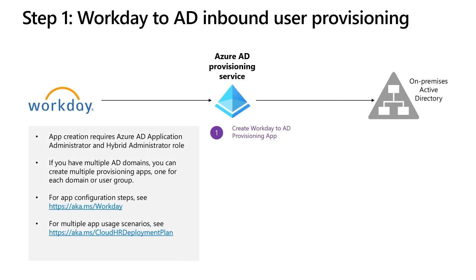Let's get started with step one. In this step, we will log into the Entra admin portal and create the Workday to AD user provisioning app from the Enterprise app gallery. If you have multiple AD domains to manage, you can create multiple provisioning apps, one for each AD domain.